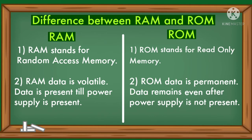Now we will learn the difference between RAM and ROM. RAM stands for Random Access Memory; ROM stands for Read-Only Memory. RAM data is volatile — data is present only while power supply is present. ROM data is permanent — data remains even after power supply is removed.